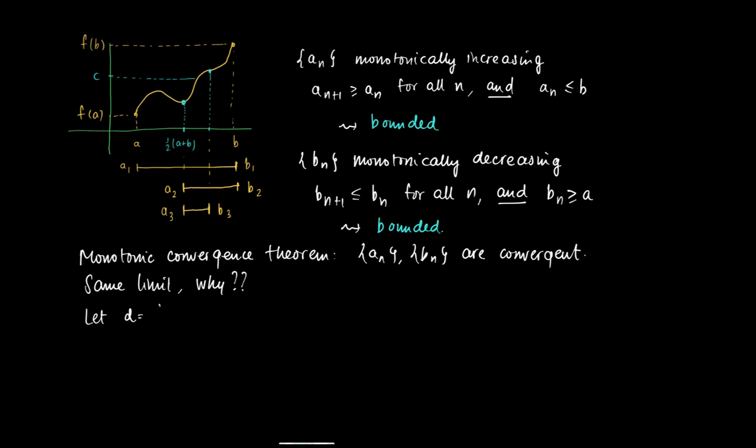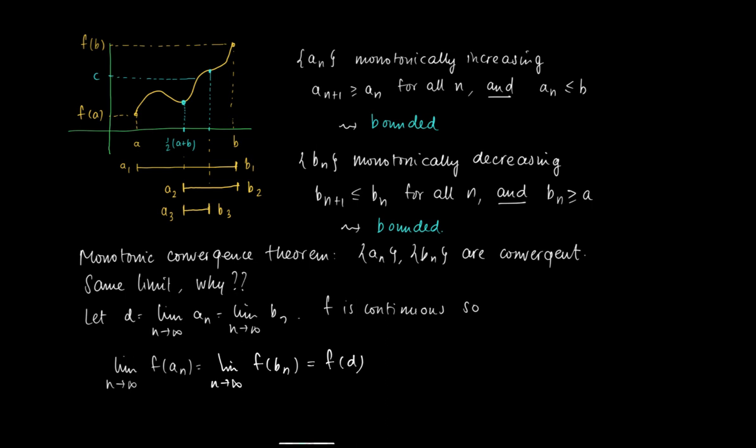Now we may call d the limit of an and the limit of bn. Since the limit of an and bn is the same, we just name it d. f is a continuous function, so if we calculate the limit of the sequence of elements f(an), the limit as n goes to infinity of f(an) equals the limit as n goes to infinity of f(bn), which is f(d) by the direct substitution property for continuous functions.